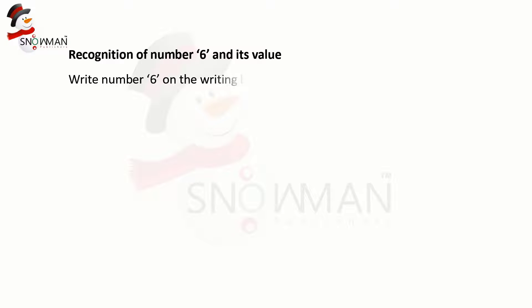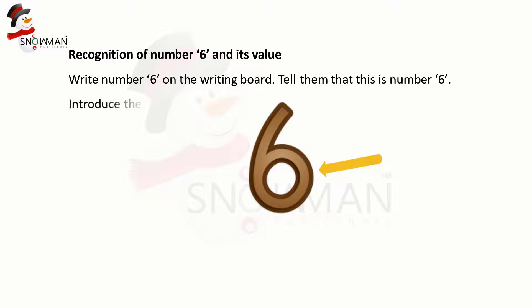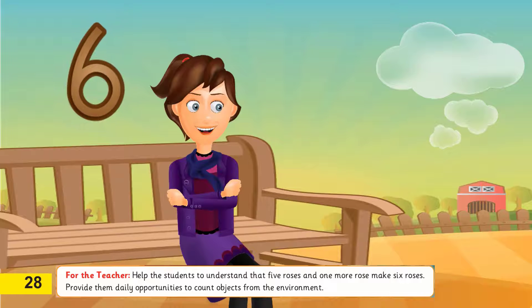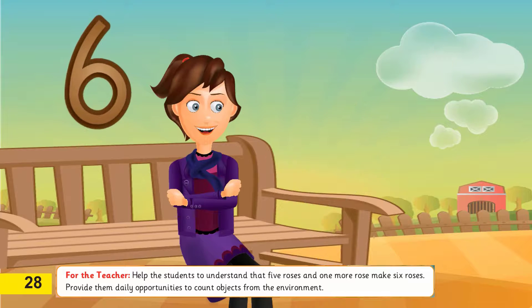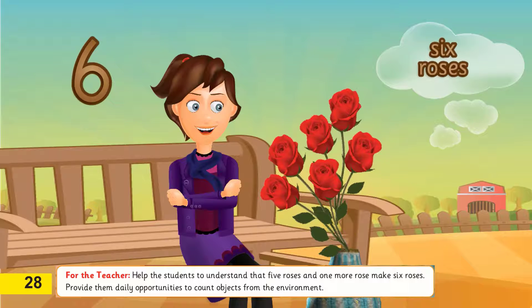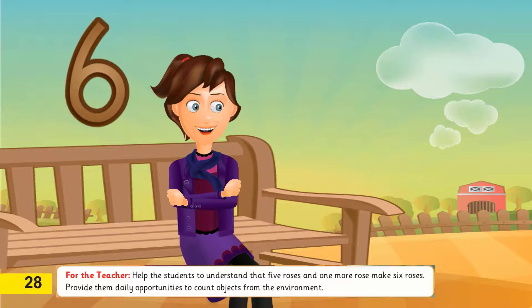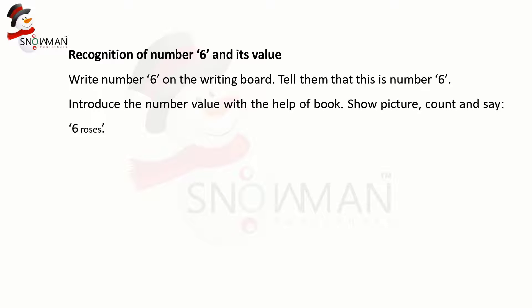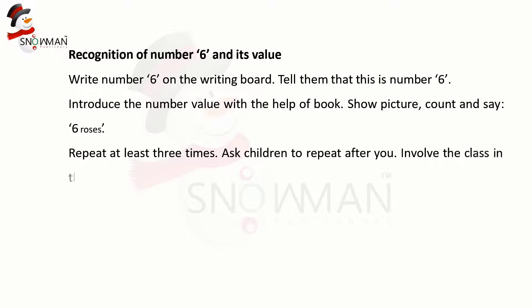Write number six on the writing board. Tell them that this is number six. Introduce the number value with the help of the book — show a picture, count and say: six roses. Repeat at least three times and ask children to repeat after you. Involve the whole class in this process.